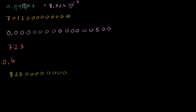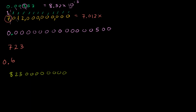For the large number 7,012 followed by zeros, we count the zeros: 3, 6, 9, 12. We start with the largest non-zero term, which is the 7 all the way to the left. So it's going to be 7.012 times 10 to the what? We count everything after the first term — that's 12 digits. So it's 7.012 times 10 to the 12th.